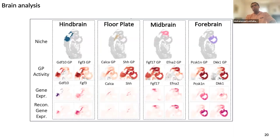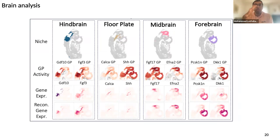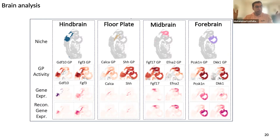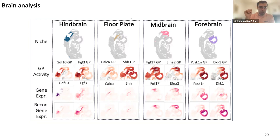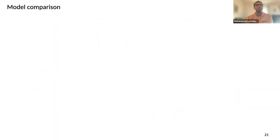For the brain, we recovered floor plates and a gene program called CalC8 — previously unreported — regulating floor plate development. Known biology such as sonic hedgehog signaling regulating brain development is also recovered, along with gene programs separating different brain regions. Using NicheCompass without other analysis, we can identify and uniquely separate forebrain, hindbrain, midbrain, and floor plate — the latter being particularly hard to identify from transcriptional data alone.